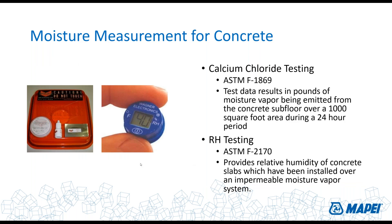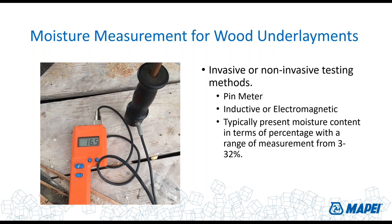For measuring moisture on concrete: ASTM F1869 is the calcium chloride test. Mapei does not recommend using an inductive or electromagnetic testing machine to determine moisture content of a concrete slab — we always refer back to these test methods. For wood floors, on the other hand, we do want you to run pin meters or inductive/electromagnetic methods to determine moisture content; they typically run anywhere between 3 and 32%.